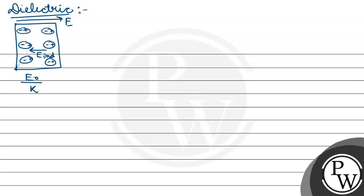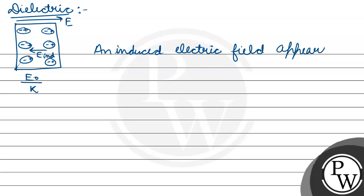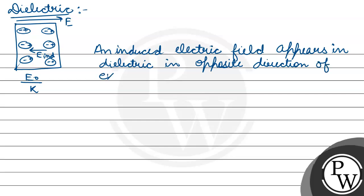So an induced electric field appears in dielectric in opposite direction of external electric field, and the magnitude will be E0 by K.